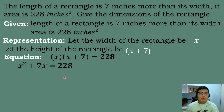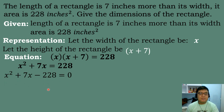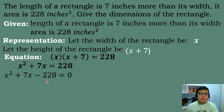We will simplify this equation. x times x will be equal to x squared. x times 7 will be equal to 7x, and then equals 228. After that, we will transpose 228 to the other side of the equation, so positive 228 will become negative 228. Then we will be solving for the roots of the quadratic equation.